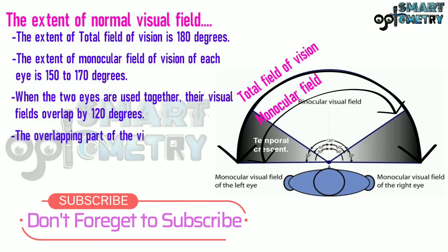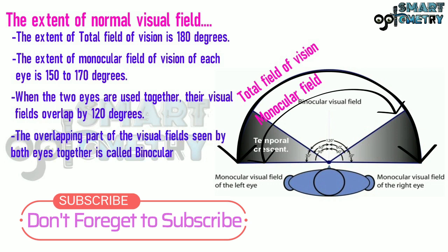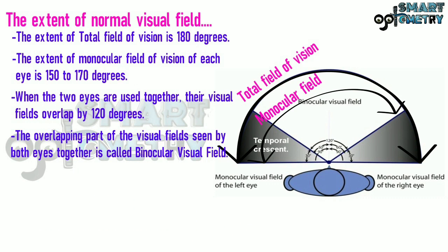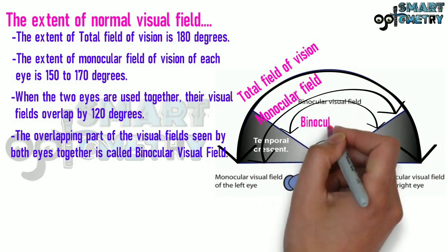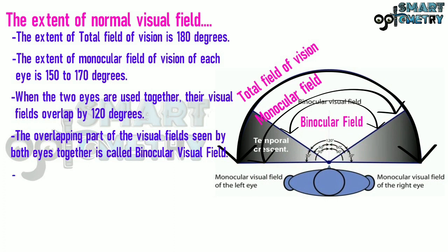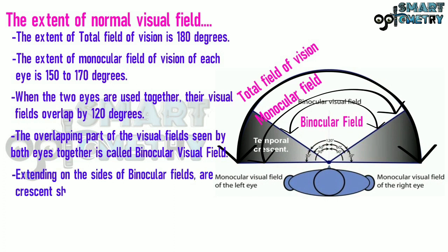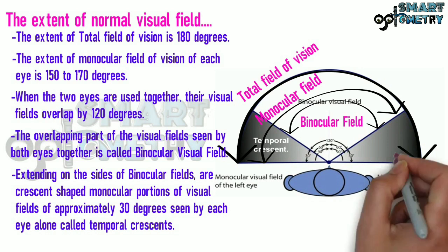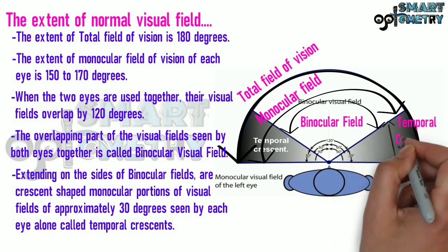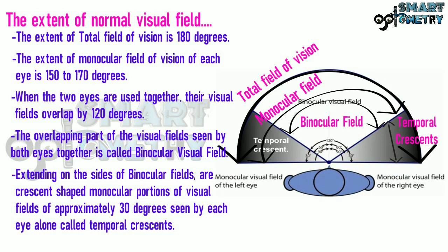The overlapping part of the visual fields seen by both eyes together is called the binocular visual field. Extending on the sides of the binocular fields are crescent-shaped monocular portions of visual fields of approximately 30 degrees, seen by each eye alone, called temporal crescents. Here at the side, you can see the temporal crescents.